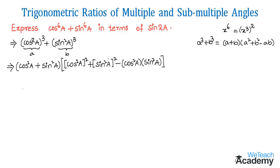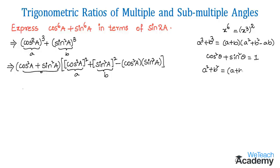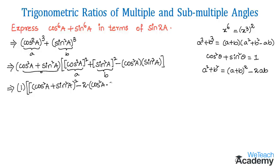Here, cos square a plus sin square a is a trigonometric identity equal to 1. For the second factor, we use a² + b² = (a + b)² − 2ab, so cos⁴a + sin⁴a becomes (cos²a + sin²a)² − 2·cos²a·sin²a, which simplifies to 1 − 2cos²a·sin²a. Then we subtract cos²a·sin²a.